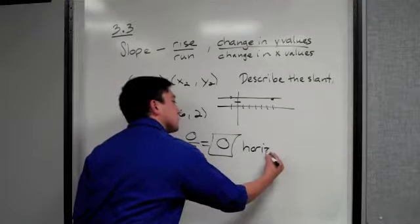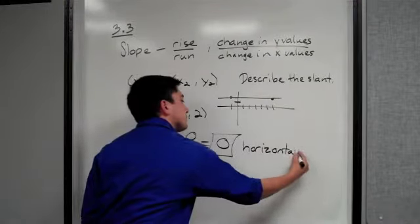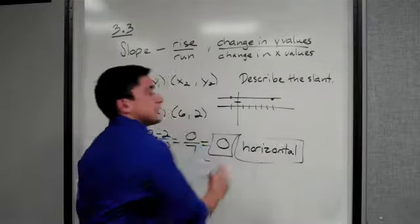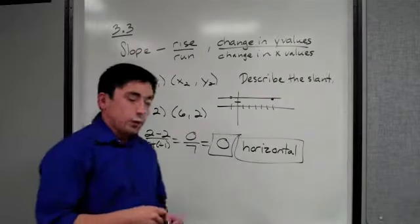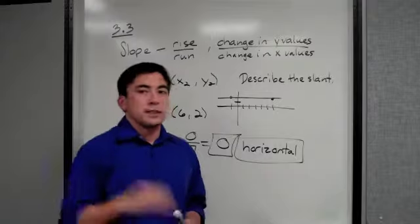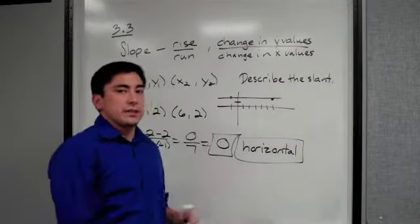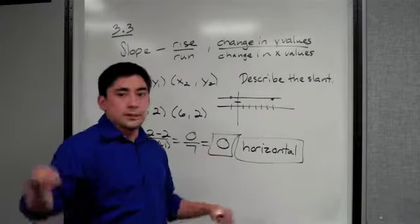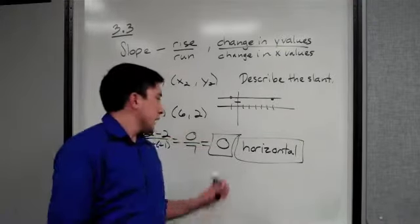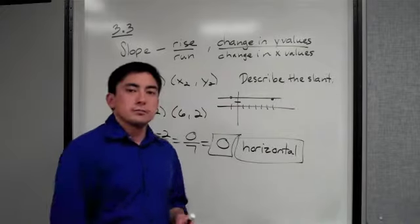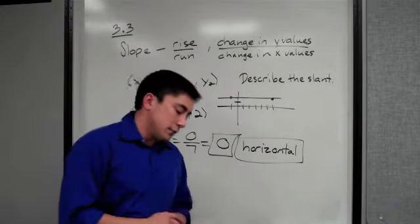So you have four types of slopes: up into the right if it's a positive number, down into the right if it's a negative number, if it's zero it's going to be horizontal, and if it were undefined it'll be vertical.